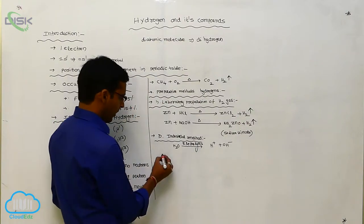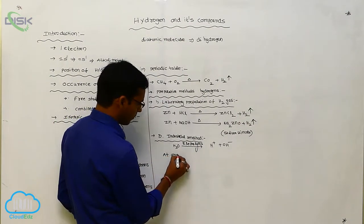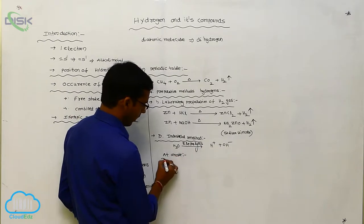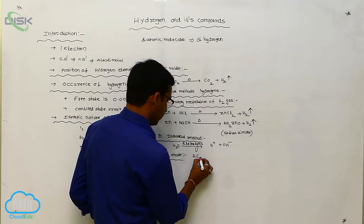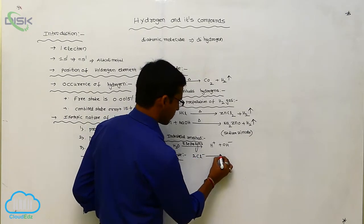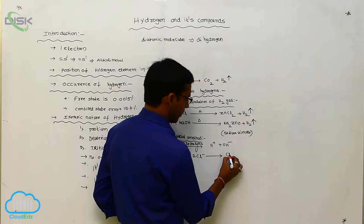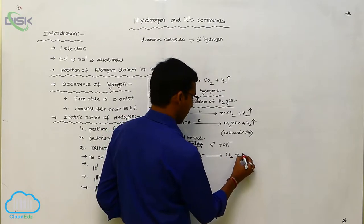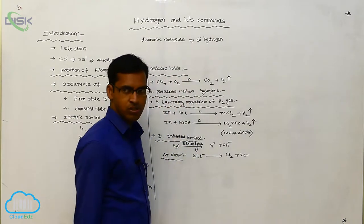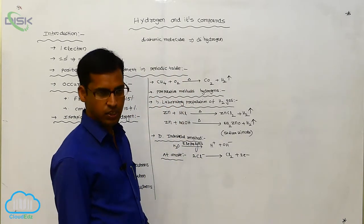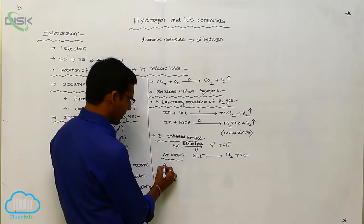At the anode, 2Cl⁻ loses 2 electrons, forming chlorine gas with liberation of electrons. This means it is an oxidation process — loss of electrons takes place at the anode.